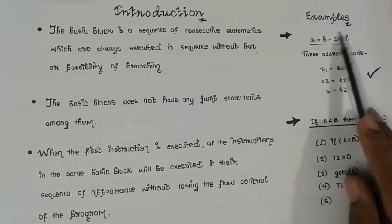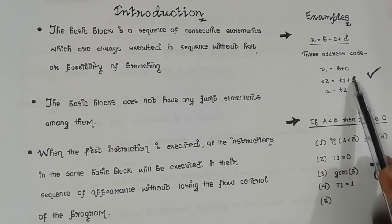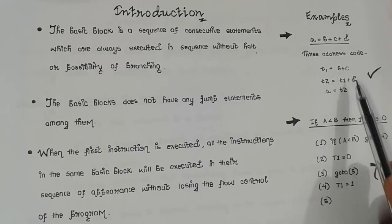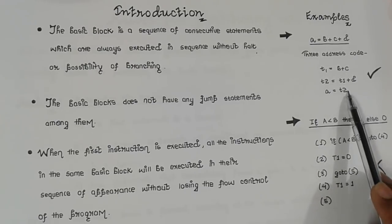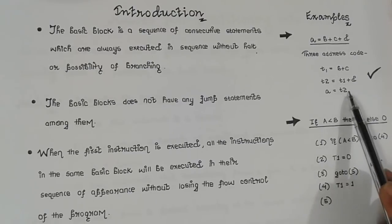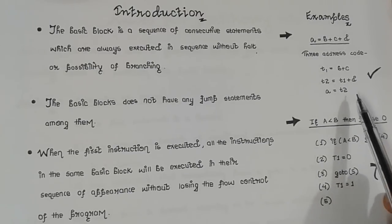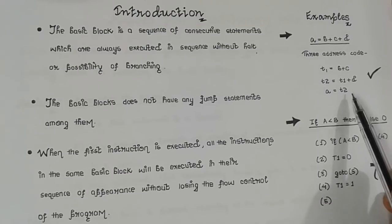If I observe my expression of three address codes, I can see these three address statements here will have sequential execution one after another. There is no possibility of branching or halt. First, b plus c is added, and the result is stored in a temporary variable.